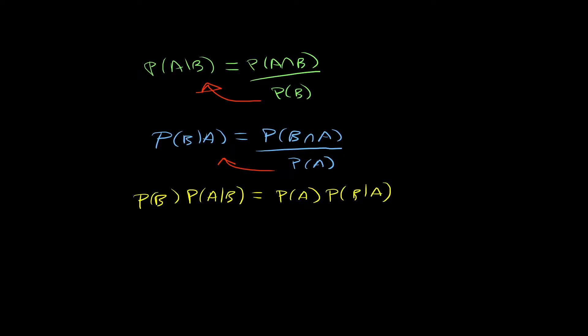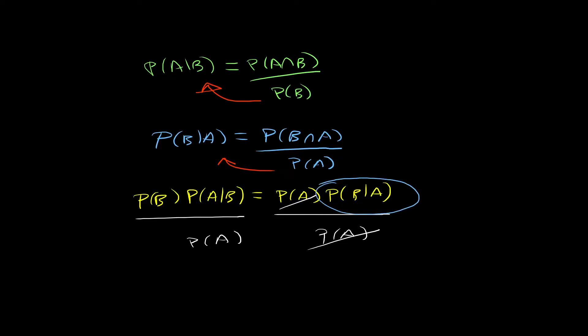This is useful when you need to find the other conditional probability. Let's say you start with the probability of A given B and you want to know the probability of B given A. What you do is divide both sides by the probability of A. These cancel out, and you are left with: the probability of B given A equals the probability of B times the probability of A given B over the probability of A.